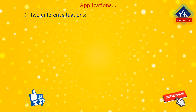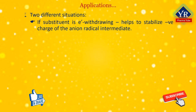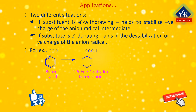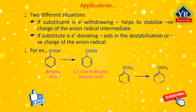One may come across two different situations: substituent being electron withdrawing in character, which helps to stabilize the negative charge of the inherent anion radical intermediate, and substituent being electron releasing in character, which aids in the destabilization of the negative charge of the anion radical. Thus, it governs overwhelmingly the regioselectivity of the reaction. For example, benzoic acid is converted into 2,5-diene-1,4-dihydrobenzoic acid, anisole is converted into 3,6-diene-2,5-tetrahydroanisole, and internal alkynes are converted to alkenes.